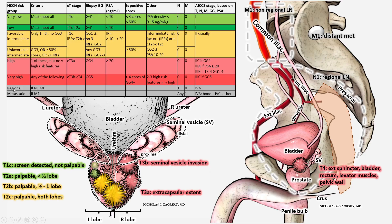The regional risk group means that you have lymph nodes involved, usually noted on a PSMA PET scan and sometimes on an MRI — this is N1 disease. It doesn't matter what else you have in terms of T stage, PSA, or Gleason score: if nodes are seen, it overrides everything else and becomes stage 4A. Importantly, you cannot have distant metastases — you have to be M0. Once you cross into M1, this is the metastatic risk group, which is either stage 4B or 4C.